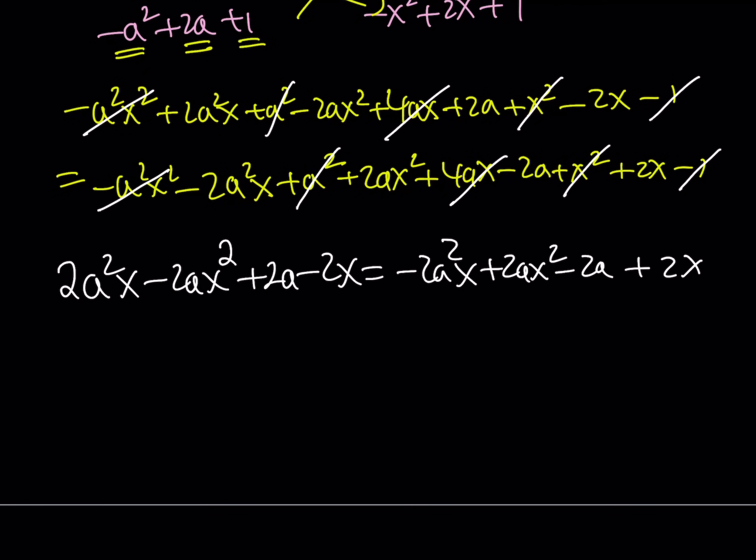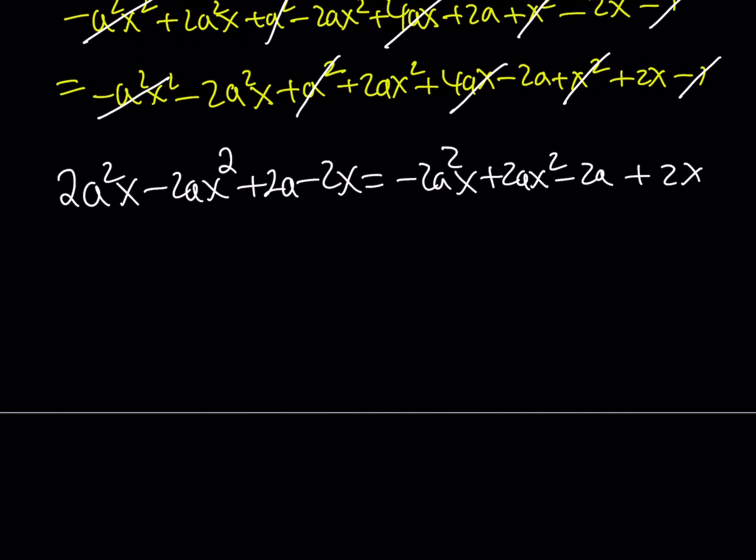Notice that everything on the right-hand side is the opposite of everything on the left-hand side. So let's go ahead and add everything on the right-hand side to the left-hand side. We're going to double, like these two are like terms. We're going to get 4a squared x minus 4ax squared plus 4a minus 4x equals 0. Now at this point, I can just go ahead and divide both sides by 4 easily.